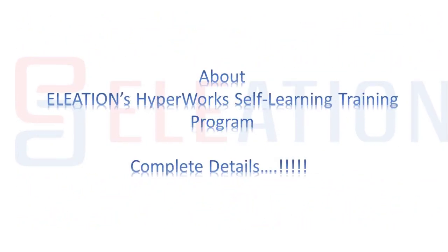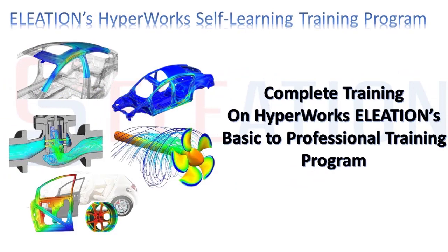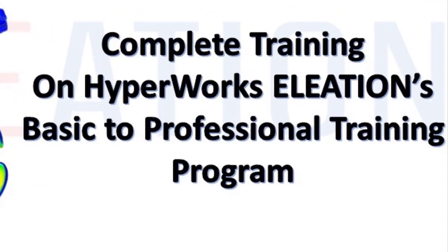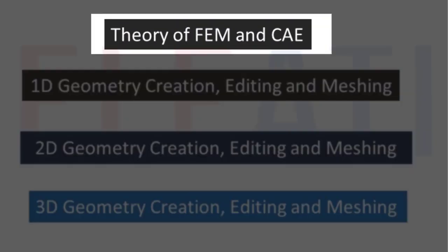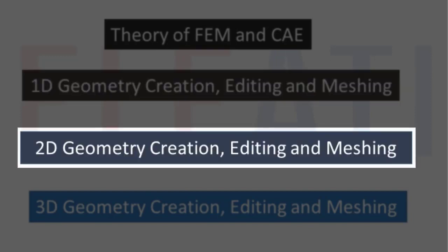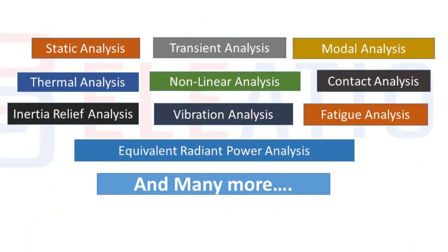Eliation's Hyperwork Basic to Professional Self-Learning Training Program includes complete training starting from basic topics all the way to professional concepts as per industry standards. Topics covered include theory of FEM and CAE, 1D geometry creation, editing and meshing, 2D geometry creation, editing and meshing, and 3D geometry creation, editing and meshing.